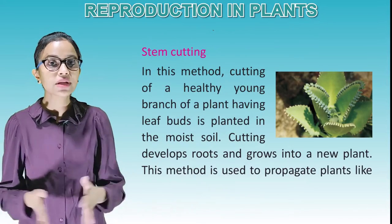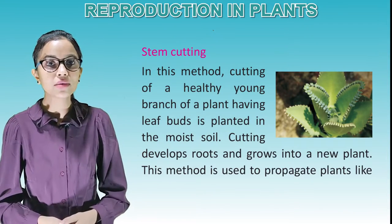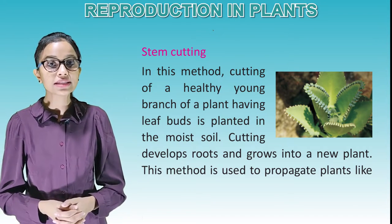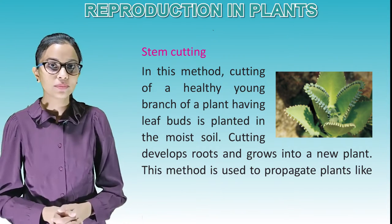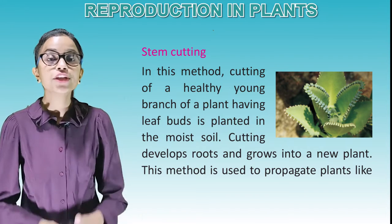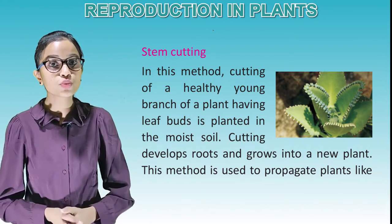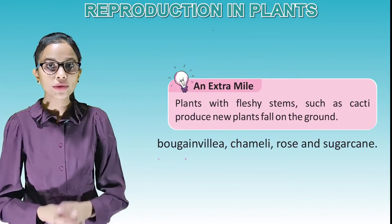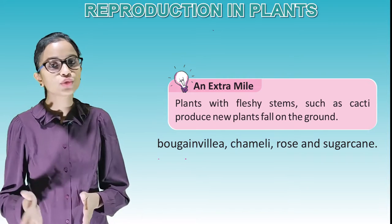Stem cutting: In this method, a healthy young branch of a plant having leaf buds is cut off and planted in moist soil. The cutting develops roots and grows into a new plant. This method is used to propagate plants like bougainvillea, chamelia, rose and sugarcane.